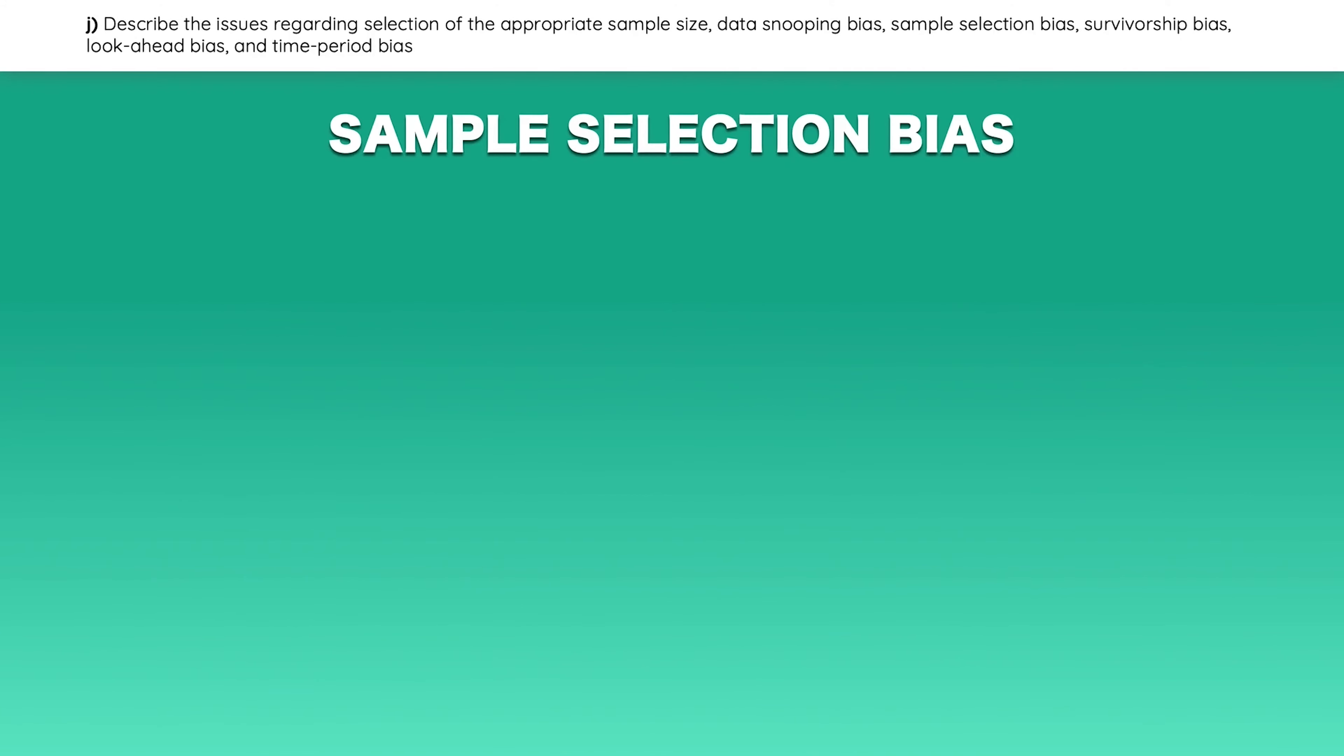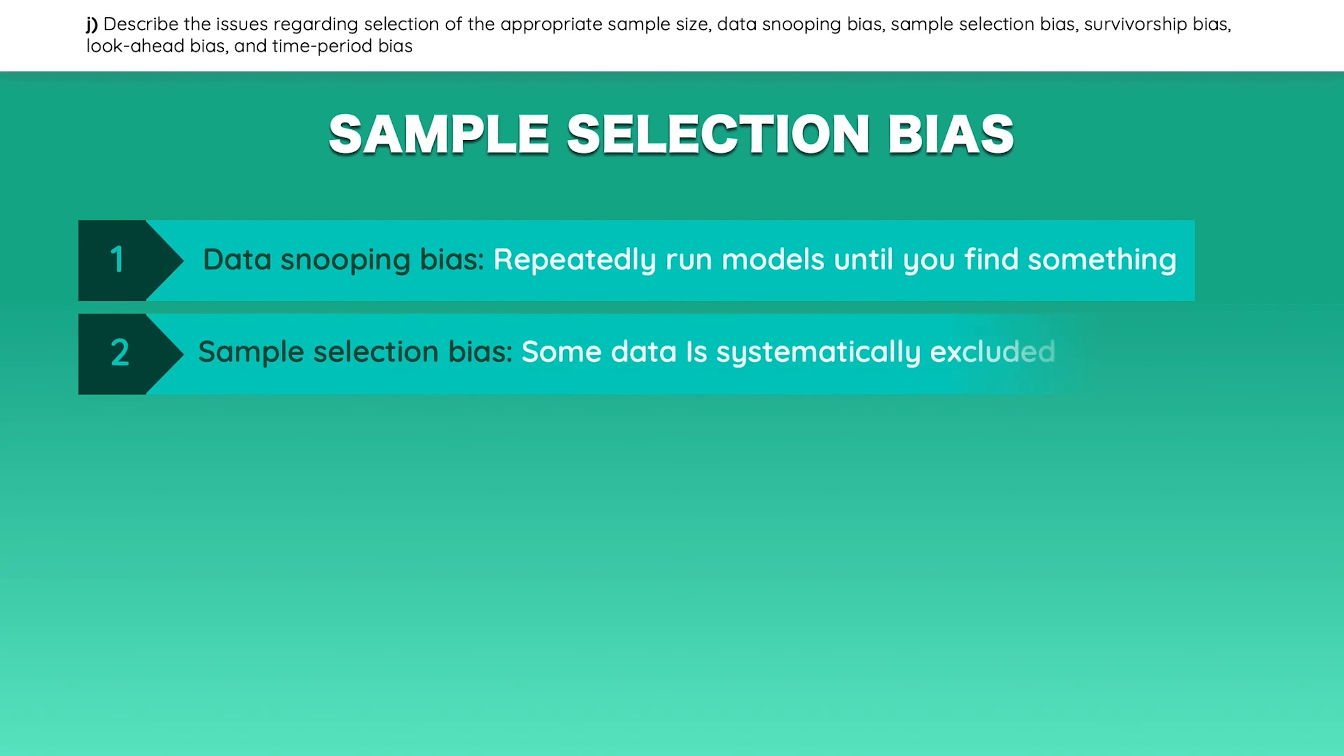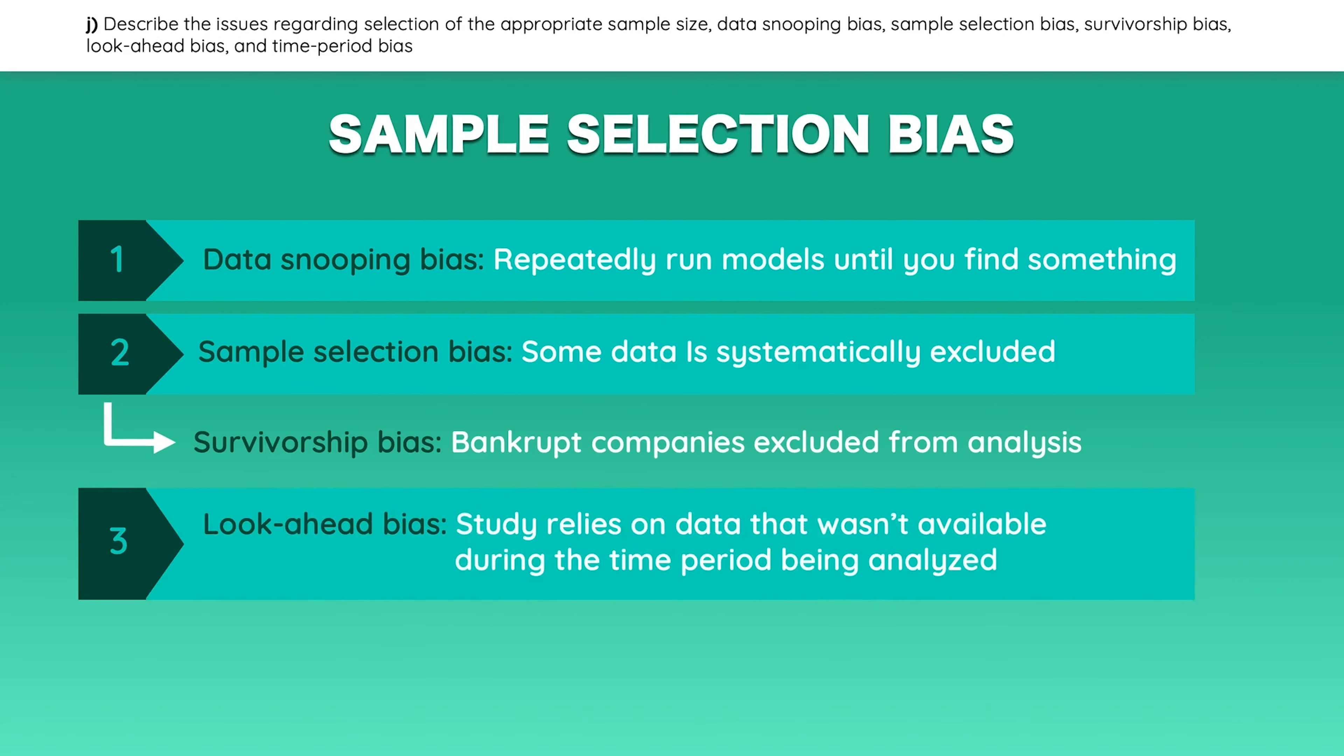Moving on to a shorter and simpler topic, you should be able to describe issues that arise when selecting a sample from a population. Data snooping bias happens when you run a model over and over again. Eventually you're going to find some pattern, but it may be the result of over-digging. Sample selection bias happens when some data is systematically excluded. A common type of sample selection bias is survivorship bias. This happens when the stocks or funds that do not survive are excluded from an investment analysis. Look-ahead bias happens when a study relies on data that was not available during the time period being analyzed. And finally, time period bias occurs when the time period used for your analysis is either too short or too long.